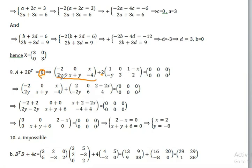The zero matrix size will be 2 by 3, so the matrix will be 2 by 3.